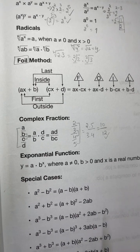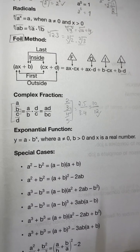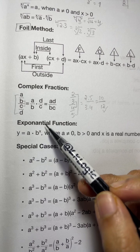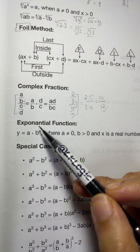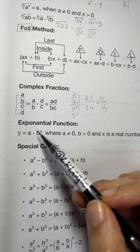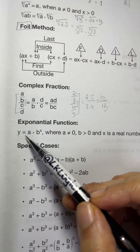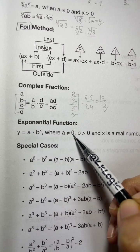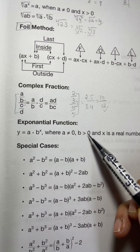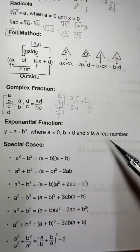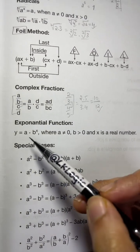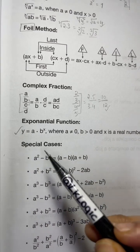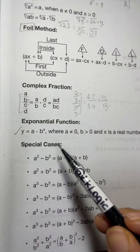Whenever you have an exponential function, it is of the form y equals a times b to the power of x, where a is not equal to zero, b is greater than zero, and x is a real number.